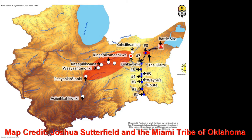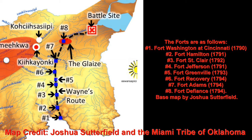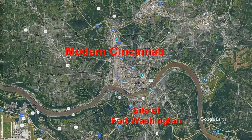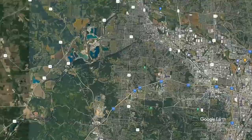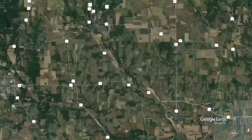And then finally, George sent out Mad Anthony Wayne. This is the area that he came into — the Northwest Territory. He came up out of the area around Cincinnati, and as he went along, he did it differently than the previous armies. So let's take a look at the area.